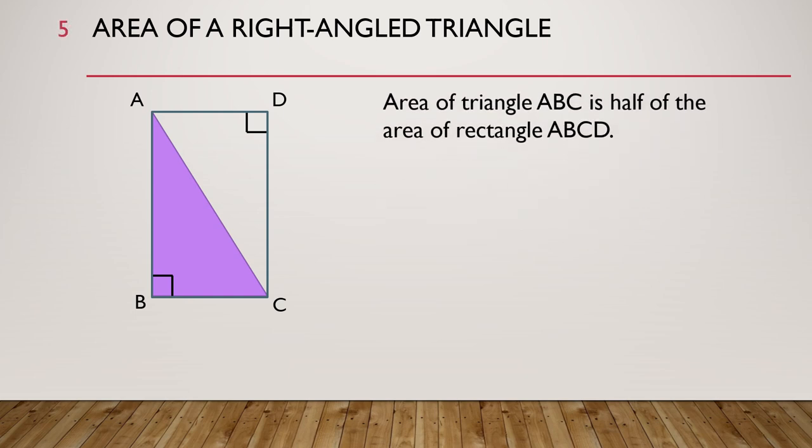Now let's put in some measurements. Let's say AB is 4 cm and BC is 3 cm. Then the area of rectangle ABCD is equal to the length times the breadth. This is equal to 4 cm times 3 cm.